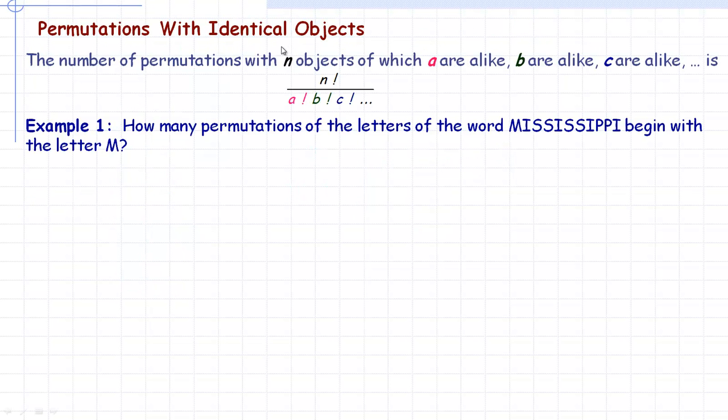So for permutations with identical objects, the number of permutations of n objects, so n is the total number, of which a are alike, b are alike, c are alike, et cetera, is the total factorial divided by, and so a is a certain kind that are the same, like the E's, so we divide by a factorial, and then there's another thing that there are more than one of, so we divide it by b factorial and c factorial, et cetera.